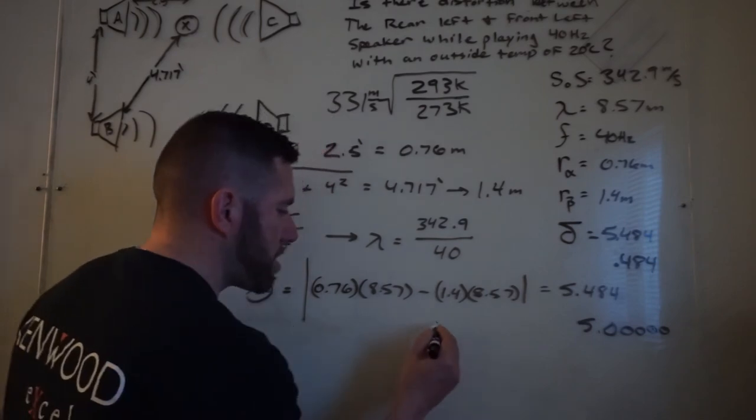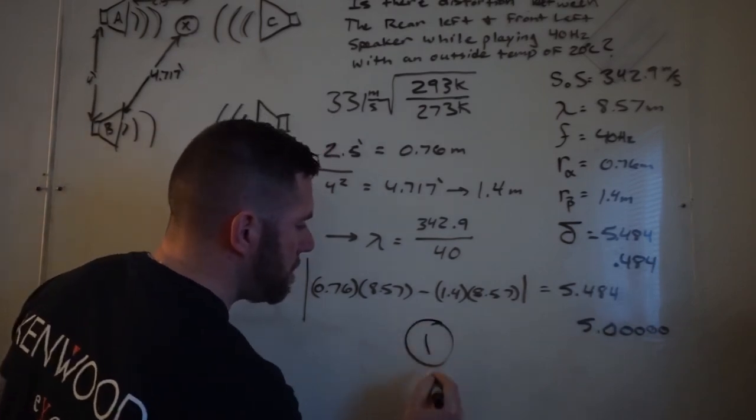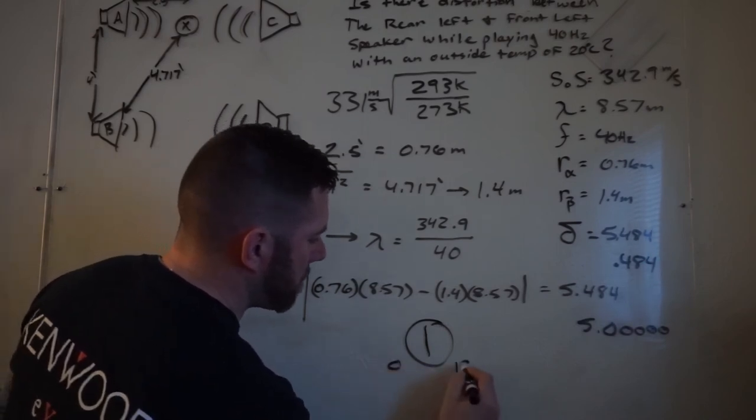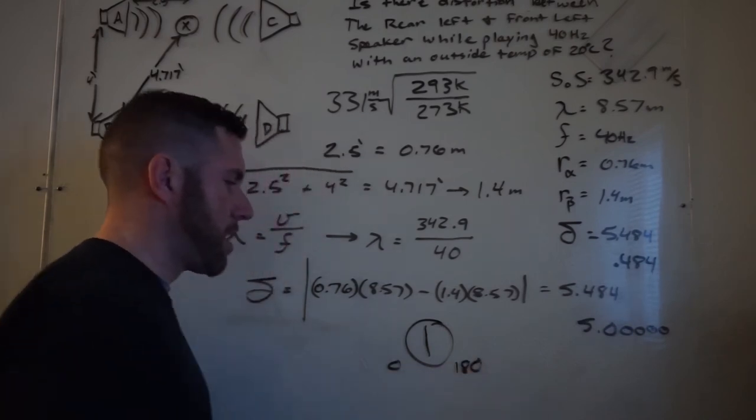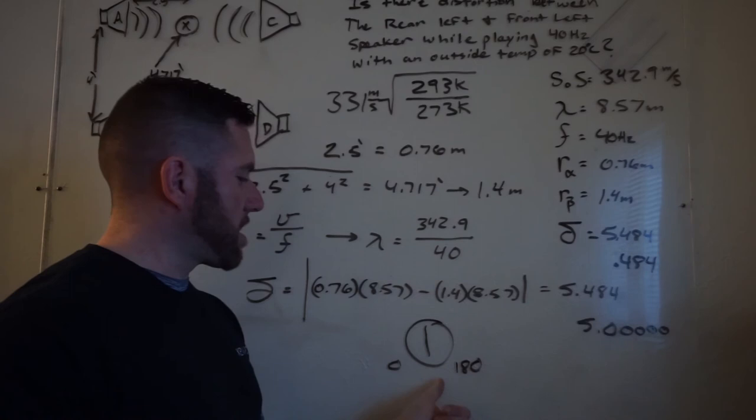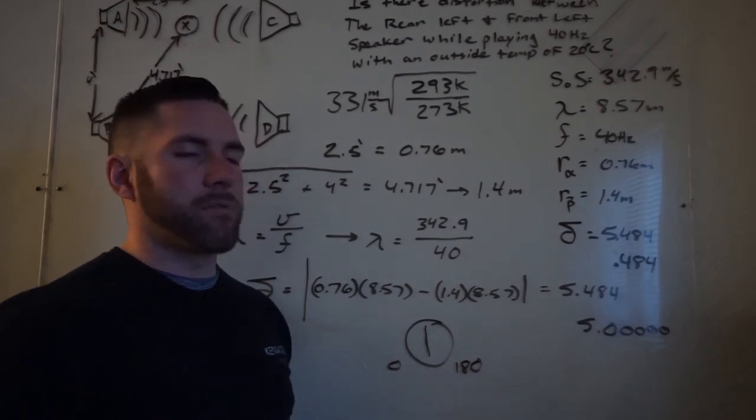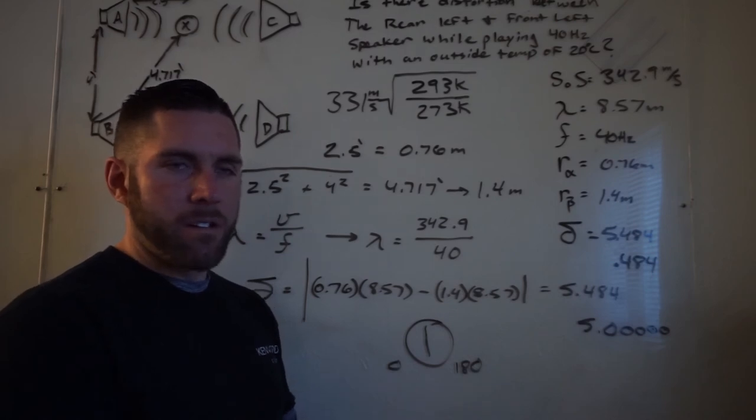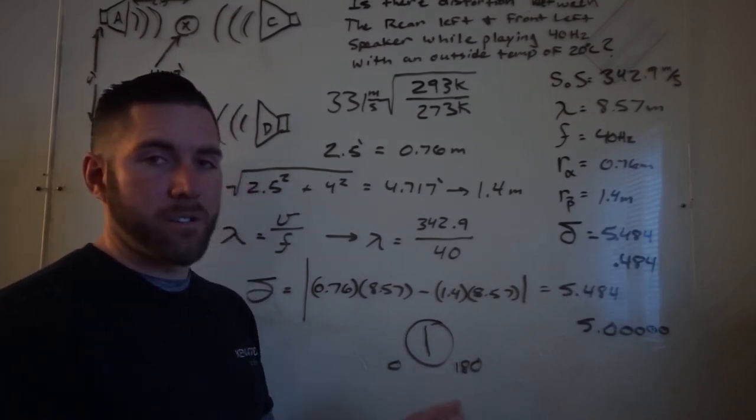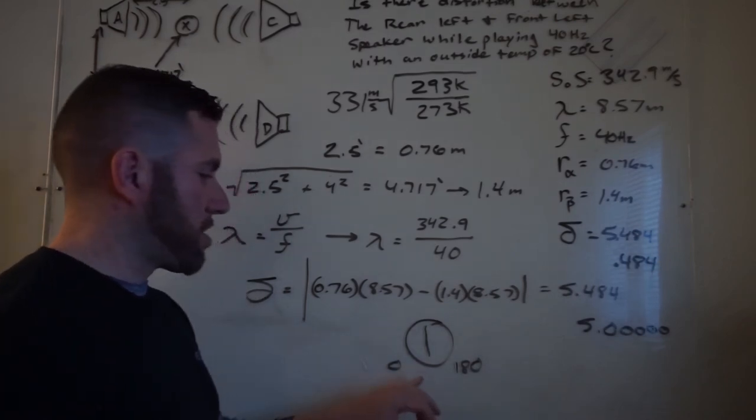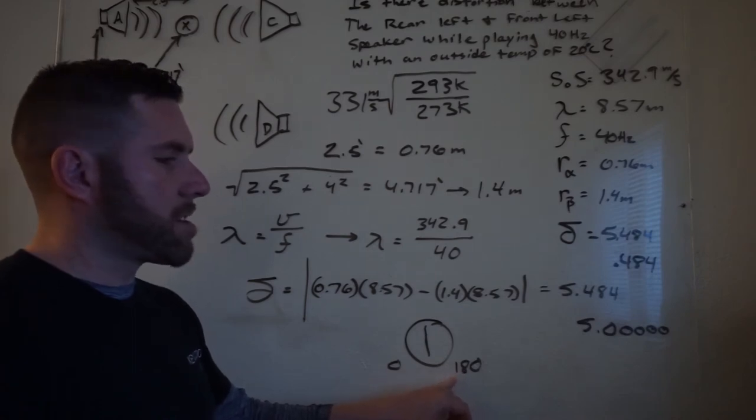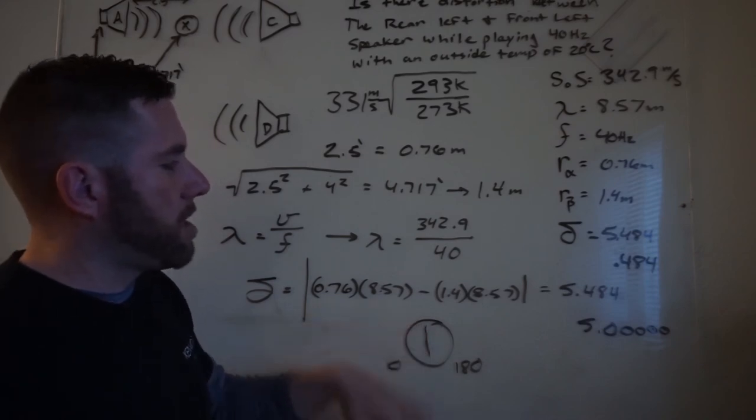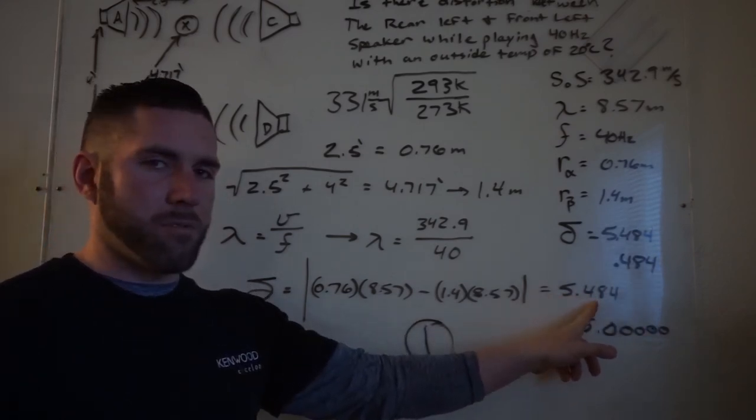Have you ever seen the knob on your amp? It's on there, and it says 0, 180, but you never ever use it? That is not there if it sounds bad, so you can sit there and switch the polarity. If you want to switch polarity, you switch the wires. If you switch this, what you're doing is delaying a certain amount. So if you turn this halfway, you would essentially fix this problem.